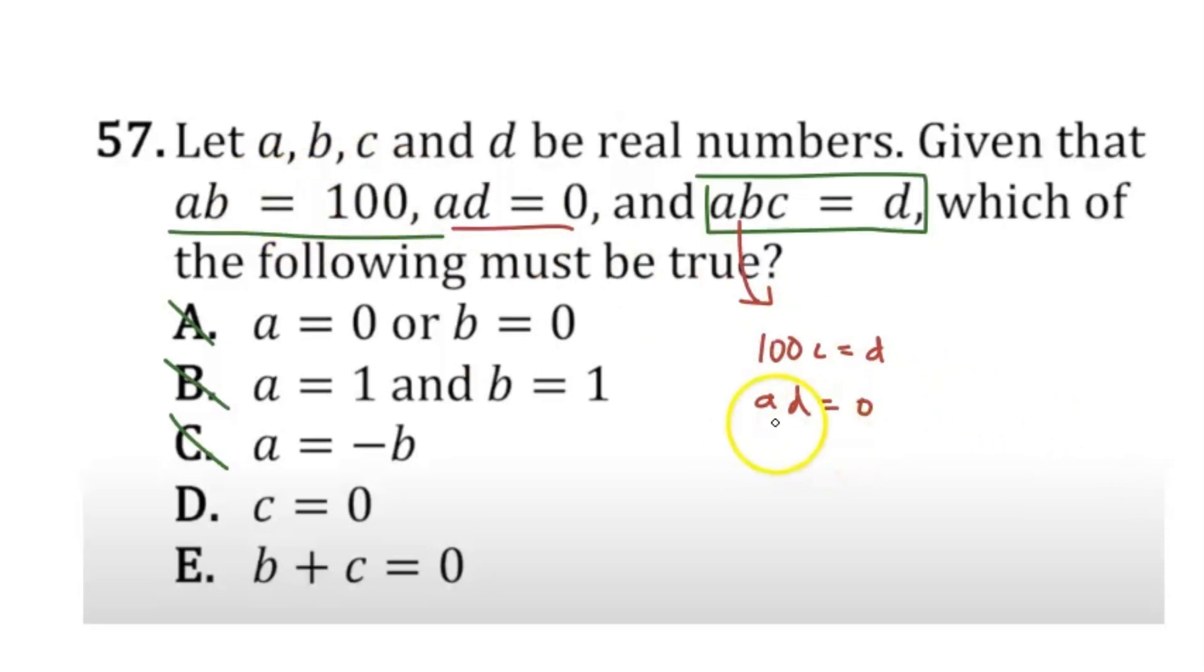We already know that a cannot be 0, so therefore, we know that d must be 0 because a times d equals 0. So how does d become 0? Well, we know that a times b is 100, so the only way for d to become 0 when ab is multiplied by c is for c to be equal to 0, and therefore D is our correct answer.